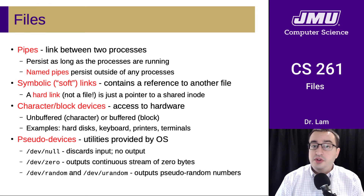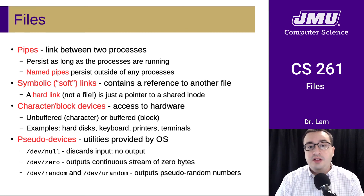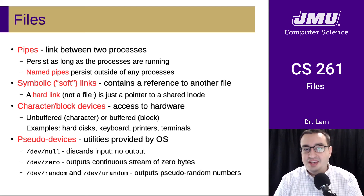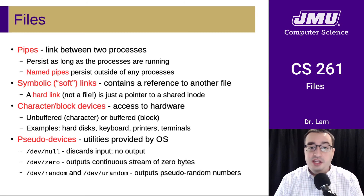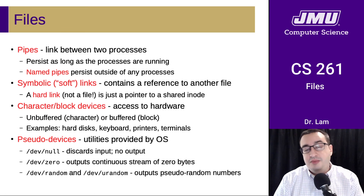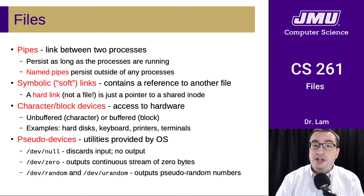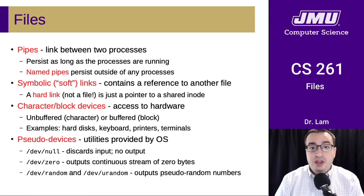There are also a few pseudo devices in Linux — utilities provided by the operating system. There's dev null, which famously discards all input and produces no output; if you want a program's output to just go away, you pipe it to dev null. There's also dev zero, which outputs a continuous stream of zero bytes. And there are dev random and dev urandom, which you can use to generate pseudo-random numbers.